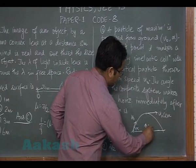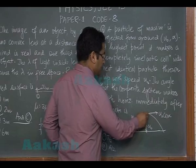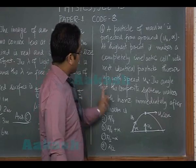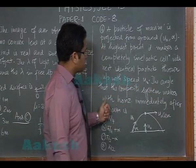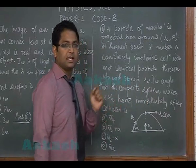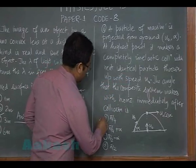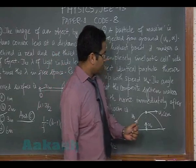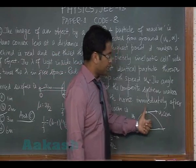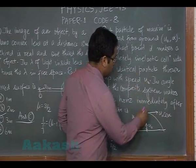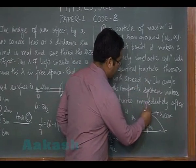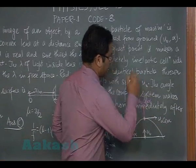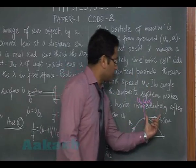It makes a completely inelastic collision with another identical particle thrown up with speed u₀. The angle that the composite system makes with the horizontal immediately after the collision - this one will give us option number A. You can find the speed of this particle by the time it reaches the highest point.